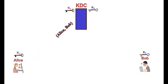Alice sends a plain text message to KDC. KDC creates a session key and makes two copies of it.